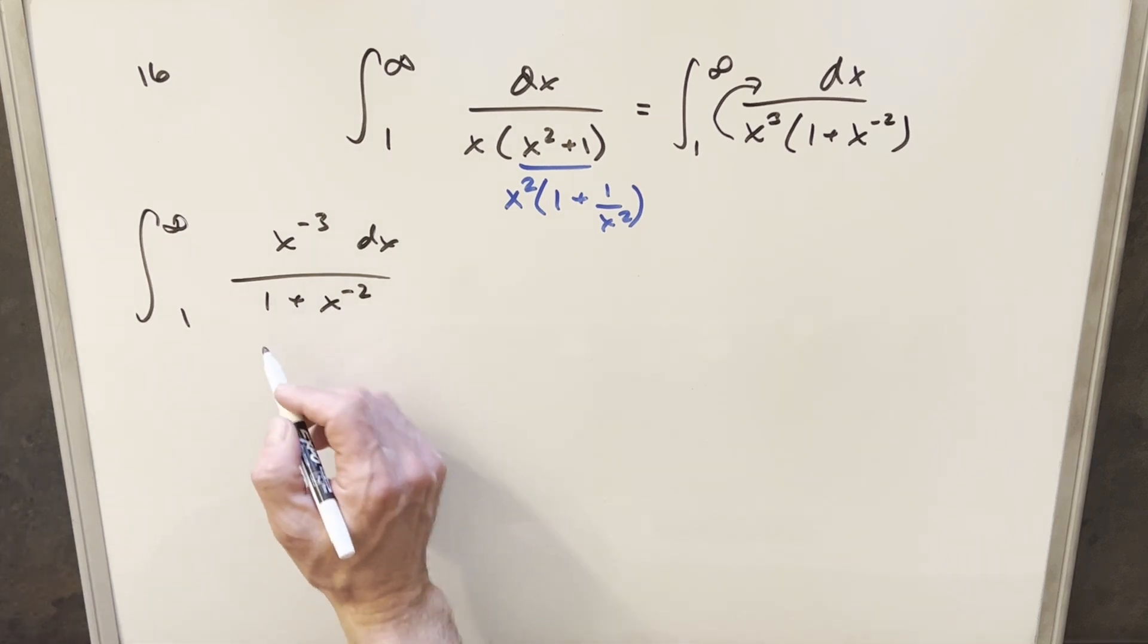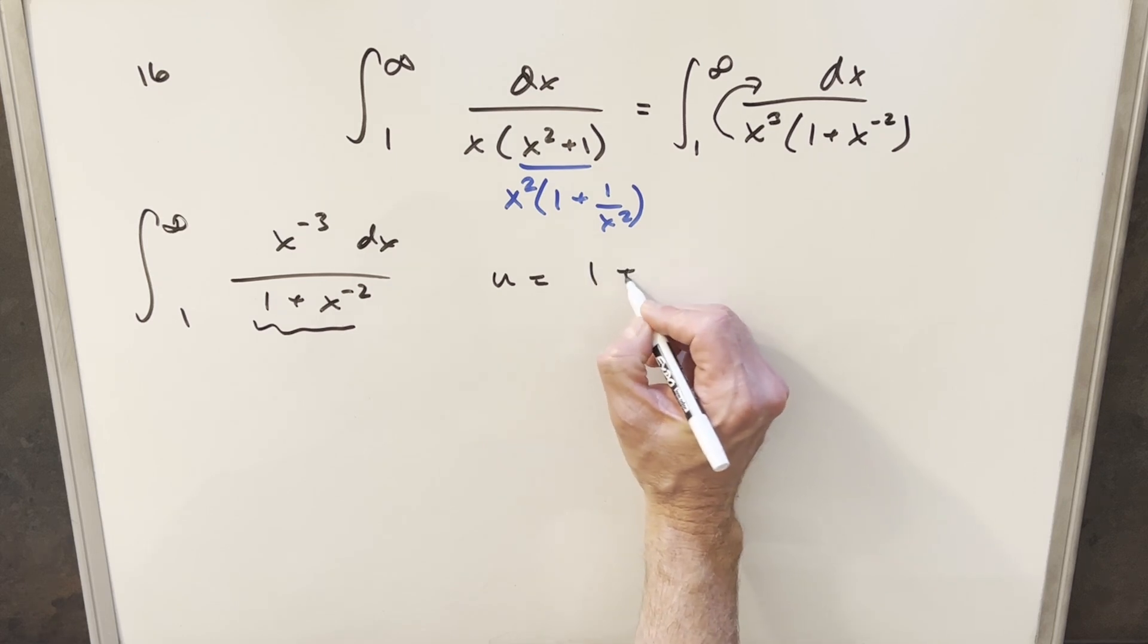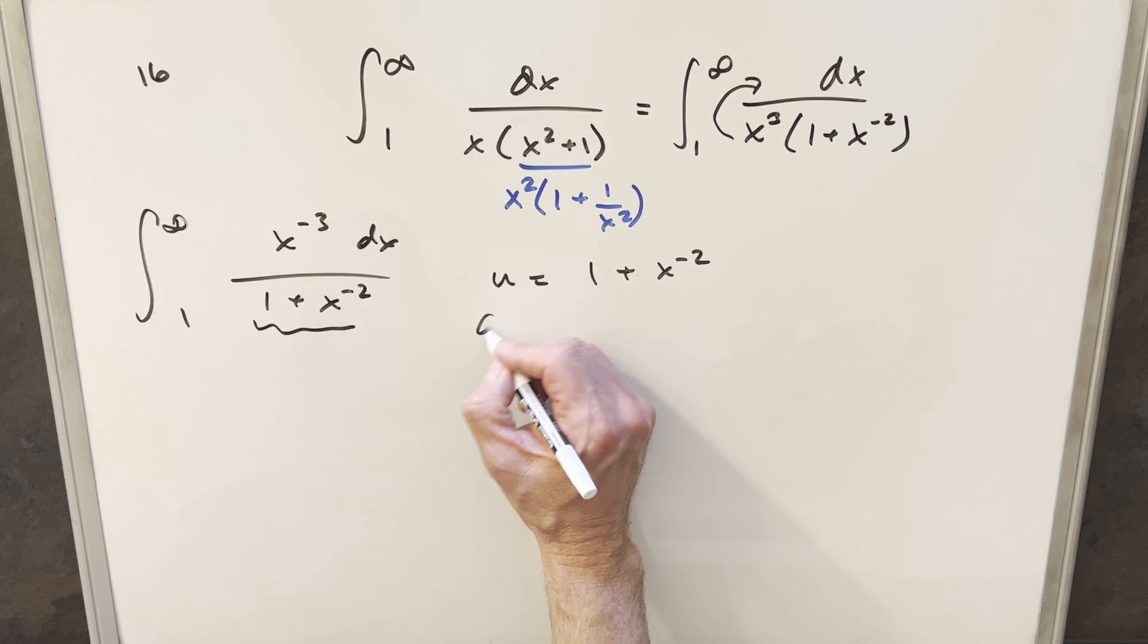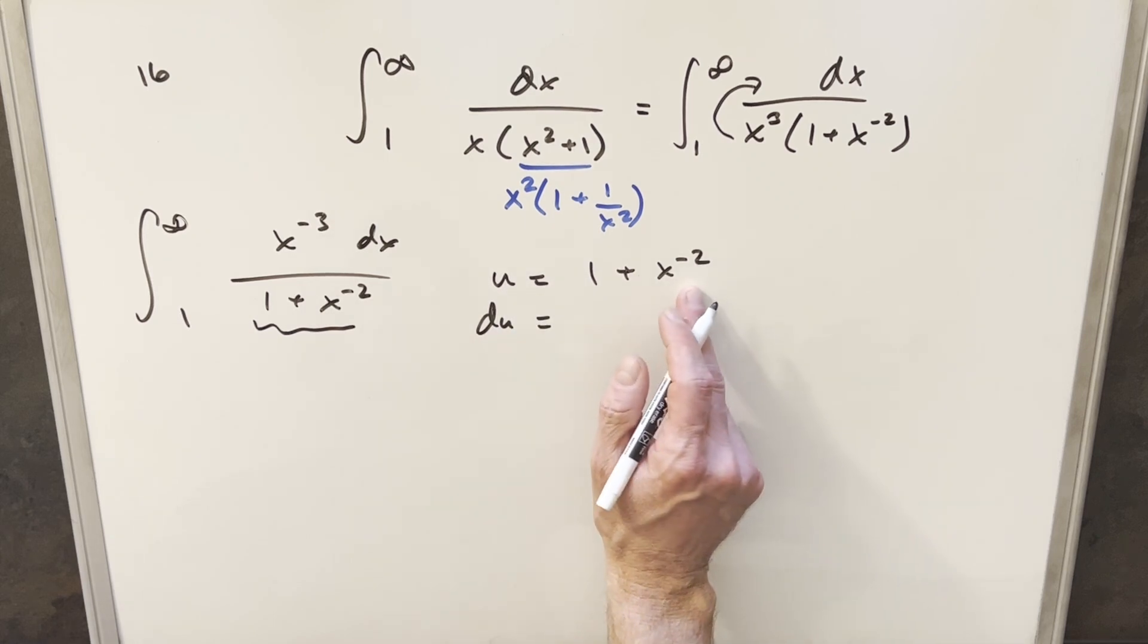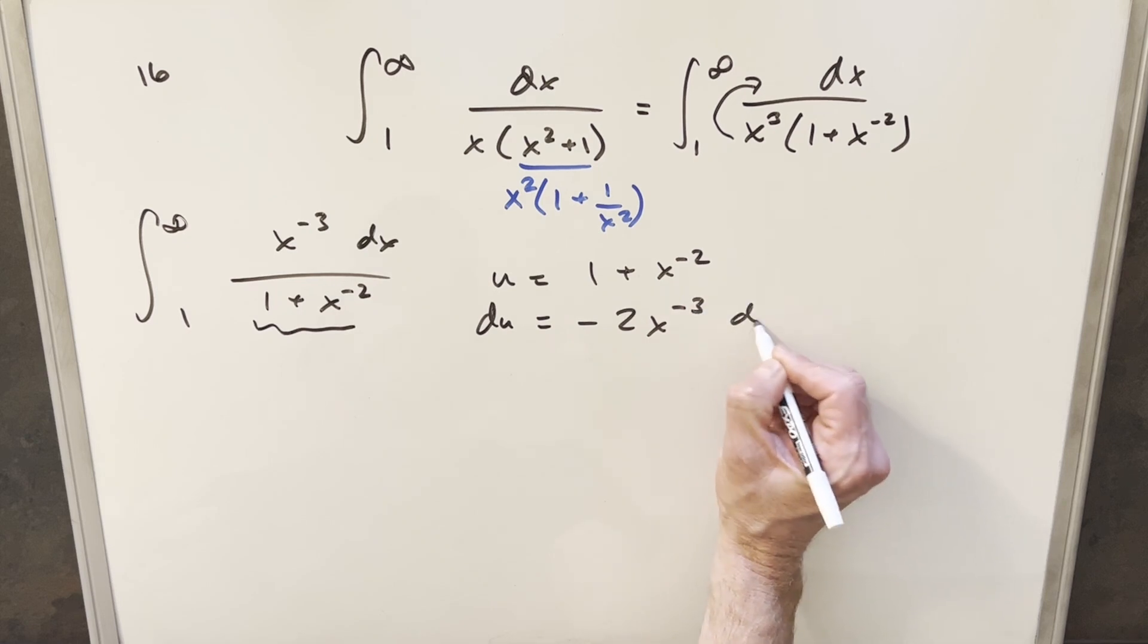So from here, we'll do a u substitution. I'm going to make the u the whole denominator. So I'll say u is just going to be 1 plus x to the minus 2. I'll take my derivative. Then for du, we're going to have, this is just going to become with power rule, minus 2 x to the minus 3 dx.